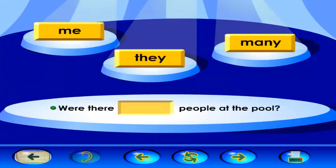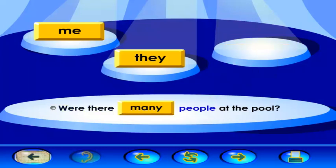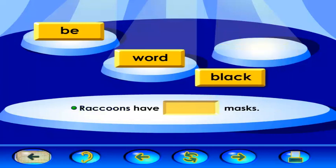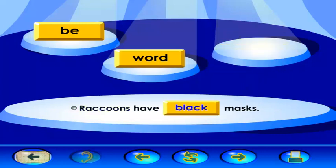Find the sight word that goes in this sentence. Were there people at the pool? Were there many people at the pool? Find the sight word that goes in this sentence. Raccoons have black masks.